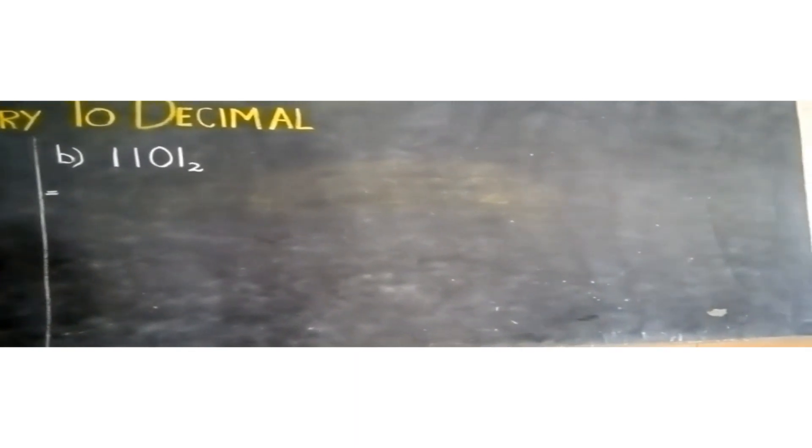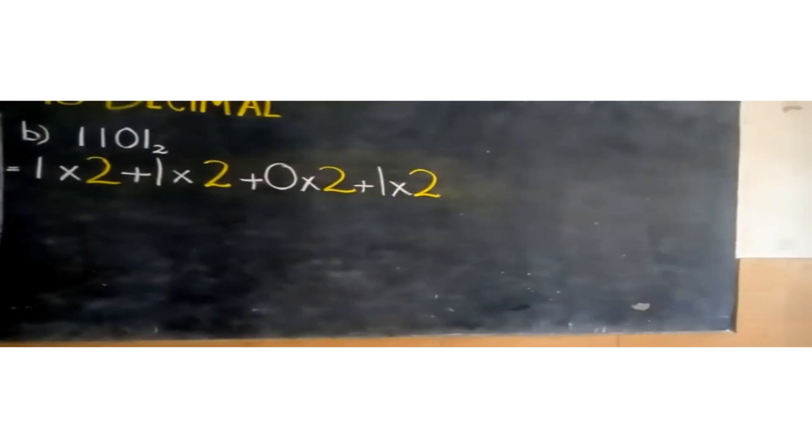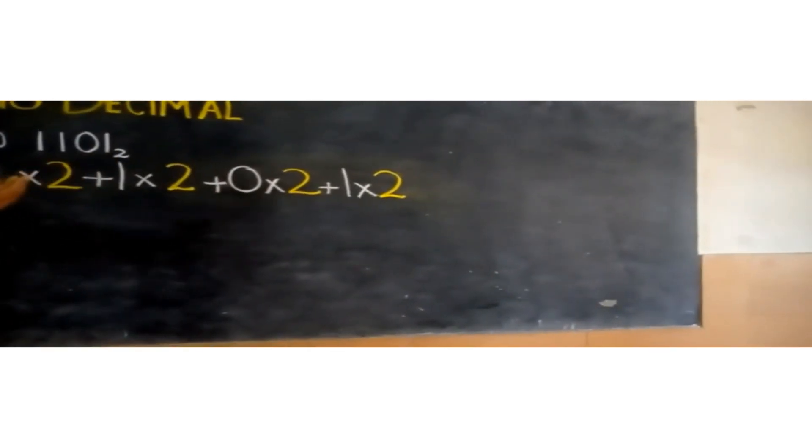Students, here we have a second example in which we will again convert a base 2 number into base 10, that is the decimal number system. Like we did before, we will multiply each digit by the number 2. Starting from the left-hand side: first digit 1 multiply by 2, plus 1 multiply by 2, plus 1 multiply by 2, plus 1 multiply by 2. Now the second step is we will write the powers from the right-hand side on the number 2.